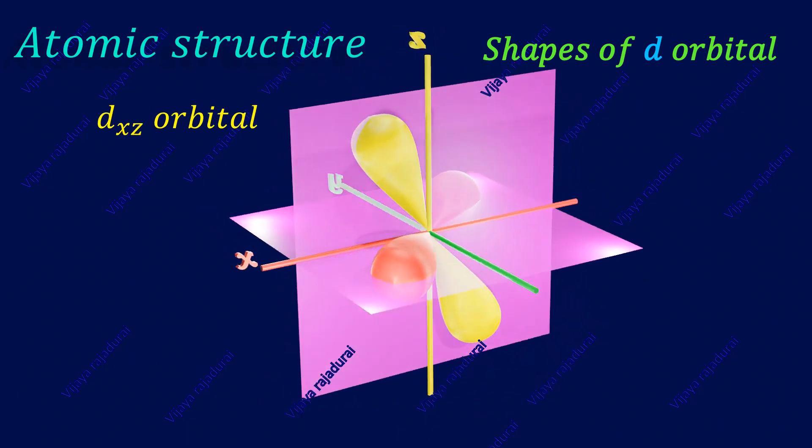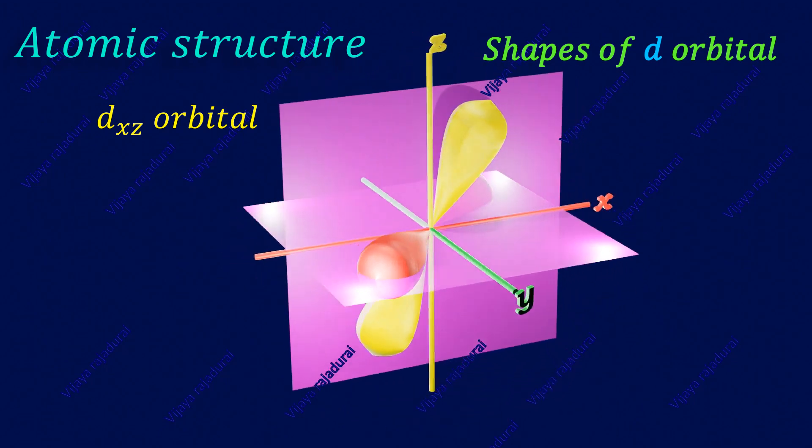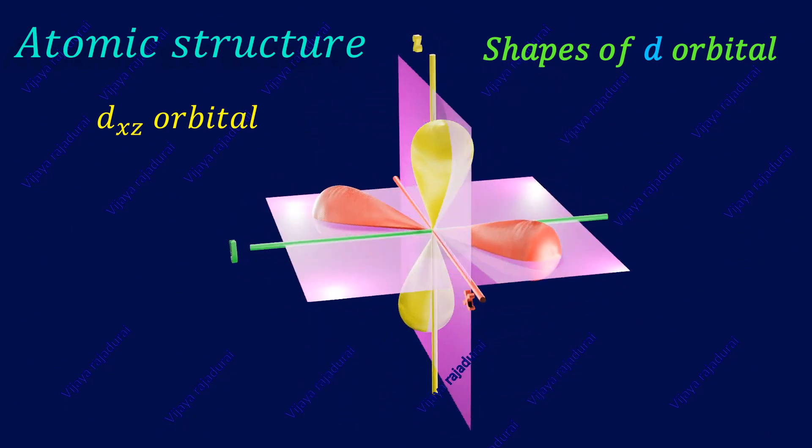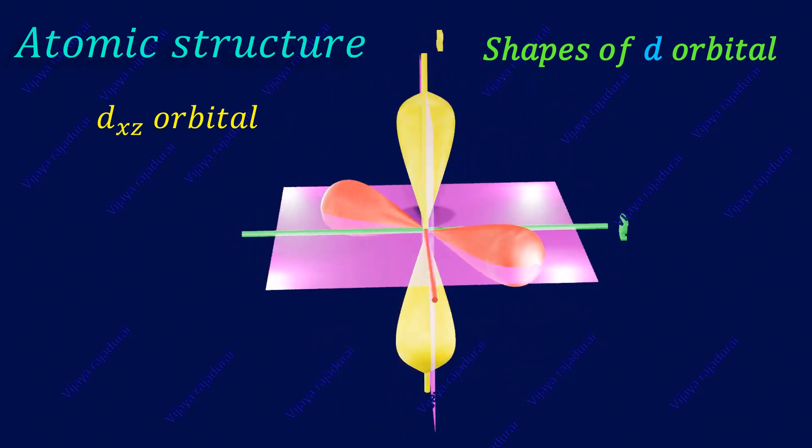In the dxz orbital, the lobe is oriented in between the x and z axis.